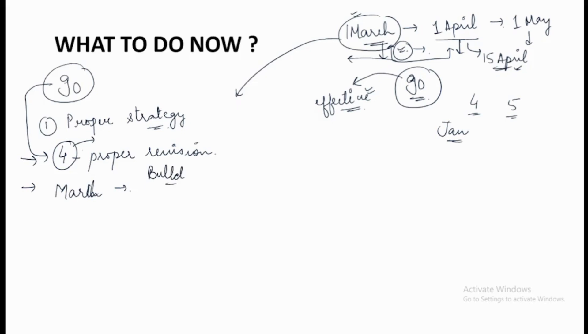Bullet pointers means, when you reach May month, you won't have that much time for lengthy revisions. You cannot take up your 200 pages of revision notes and start revising them. You need to make sure you have your bullet pointers - all the most important pointers revised and recalled very effectively.